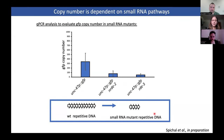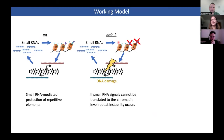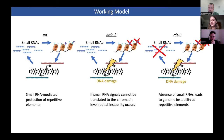This leads us to our model, where small RNAs induce histone modifications that lead to adequate transcription of repetitive DNA, which can then be used as a template to generate small RNAs that continue the cycle. In the NERD2 mutant, we lose some chromatin modifications, which leads to DNA damage that forces the contraction of these repetitive sequences and repeat instability. Similarly, in the RDS3 mutant, we lose small RNAs and corresponding chromatin modifications, also leading to DNA damage and contraction of repetitive DNA and genome instability.